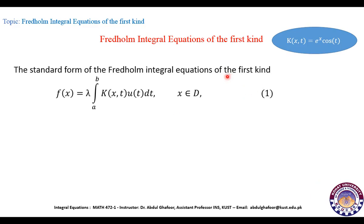Fredholm integral equations of the first kind: the standard form is given in equation 1, where K(x,t) is the kernel, f(x) is the data function, and u is the unknown function to be computed. Remember, this data function f(x) must lie in the range of K(x,t). For example, if K(x,t) = e^(x)cos(t), then for any u(x), f(x) will be a multiple of e^x, and we say that f(x) lies in the range of K(x,t).